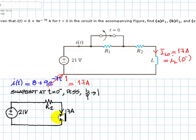21V divided by r2 is 17A. That is correct. That means that r2 has to be 21V divided by 17A, 1.235 ohms. And that is the answer to question B of this exercise.